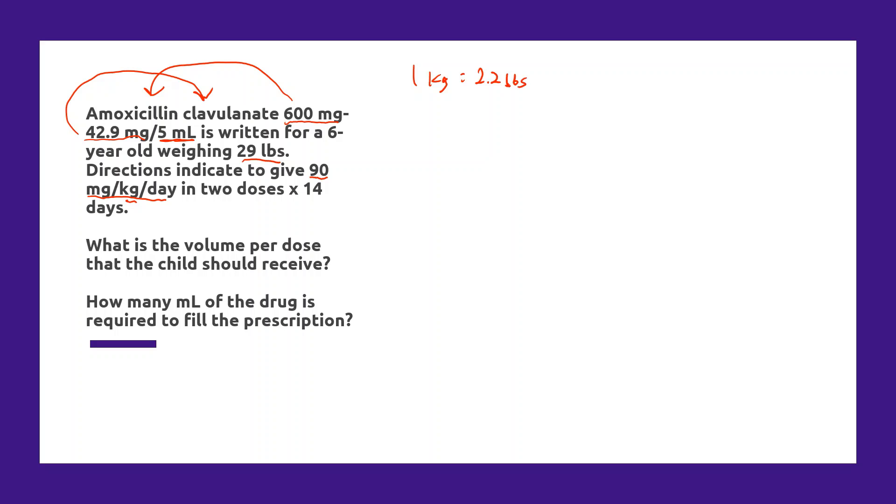Now I'm a big fan of cross multiplication, but a really simple way to convert weight from pounds to kilograms is to simply take the weight in pounds, so 29 pounds, and divide it by 2.2 and that'll give us the weight in kilograms. 29 divided by 2.2 is 13 and we'll round this to the nearest tenth, so 13.2 kilograms. So that's the weight that we're going to be dealing with.